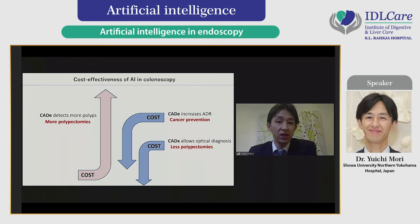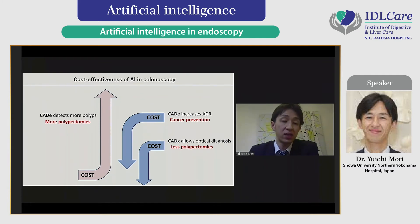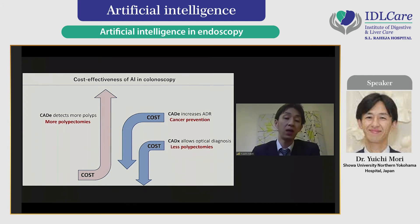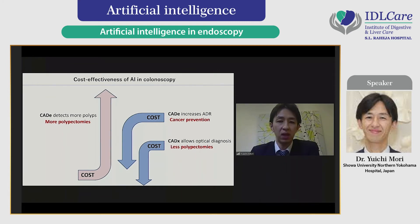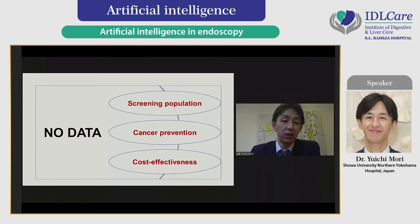It is very challenging for colonoscopy because the AI computer-aided detection system primarily increases costs, unfortunately, due to the increased number of polyps detected, increased polypectomies, and possibly increased surveillance colonoscopies. However, this cost increment can be mitigated by the cancer prevention effect due to increased ADR and also with use of computer-aided diagnosis. Accurate cost-effectiveness analysis is strongly required to get reimbursement for AI in colonoscopy. The biggest current drawback is the lack of data on long-term effectiveness—we don't know the effect of AI in the cancer screening population, the cancer prevention effect, or the accurate cost-effectiveness.